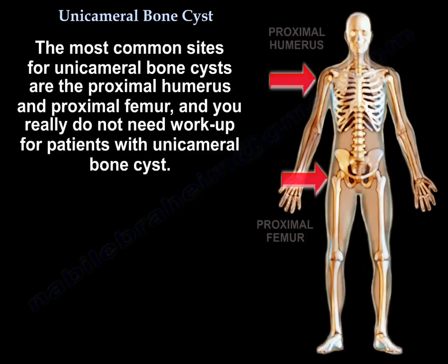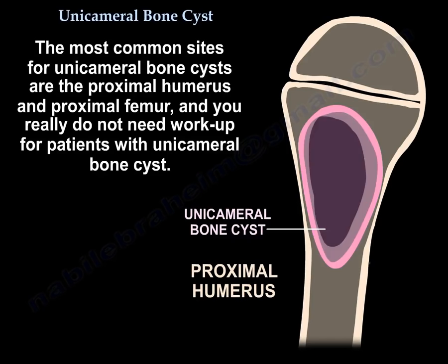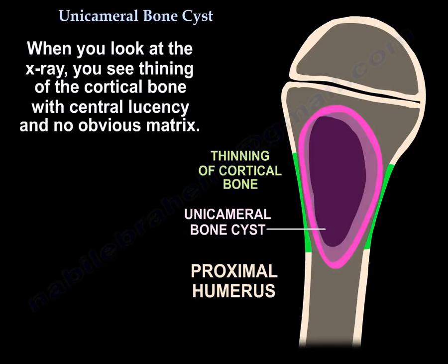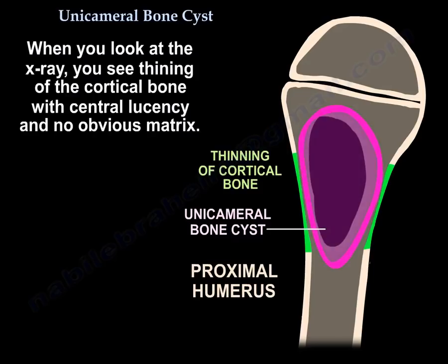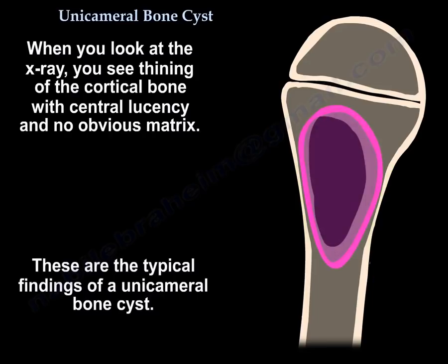The most common sites of unicameral bone cyst are the proximal humerus and the proximal femur. You really don't need extensive workup for patients with unicameral bone cyst. On x-ray, you see thinning of the cortical bone with central lucency and no obvious matrix — these are the typical findings.